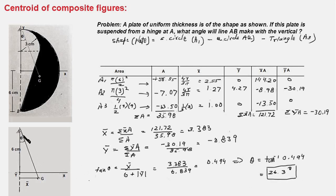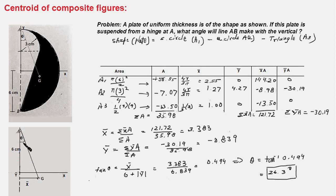So line AG, which connects the point of suspension to the centroid, becomes vertical in the steady-state equilibrium condition. The line AB turns towards the left, but the angle between line AB and the vertical line remains equal to θ. That is the answer and we are done.